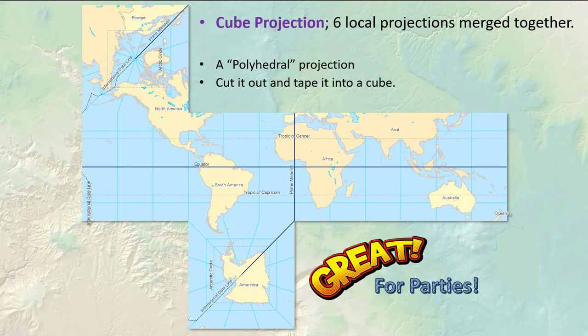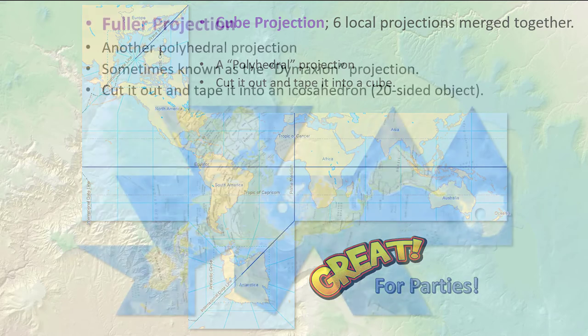This cube projection is just fun. It's not really useful for any kind of analysis, but you can print it up, cut it out, and fold it into a cube. This is called a polyhedral projection — it means you take the same shape and form it over the surface of a sphere. In this case, we're taking squares and forming it.